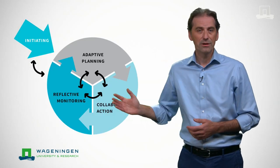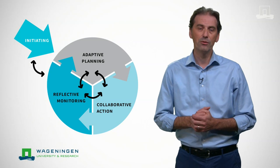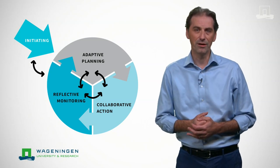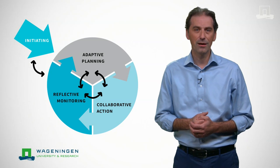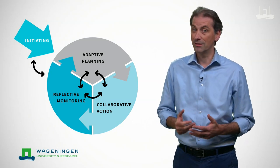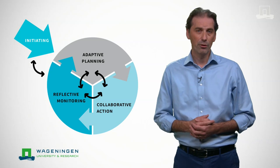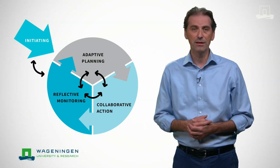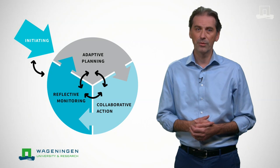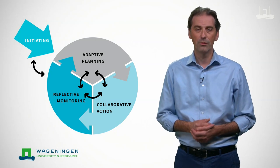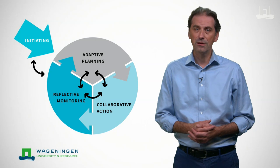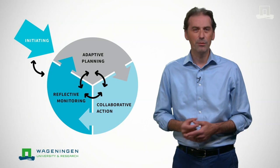We use a simple process model to help you ask these questions. It starts with an initiating phase, in which someone gets the idea to start an MSP and must clarify why this is a good idea. From there on, the adaptive planning phase is about defining in detail what issues and opportunities will be focused on, based on an agreed theory of change. The challenge here is to get everybody's contribution.